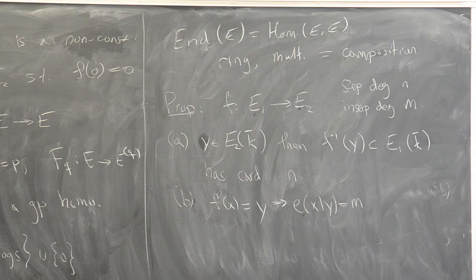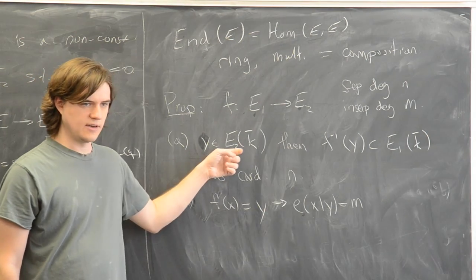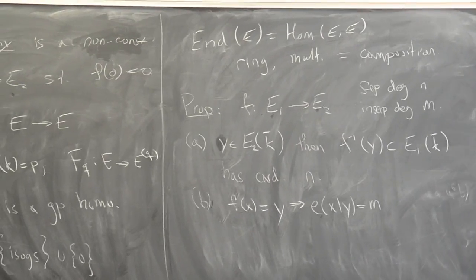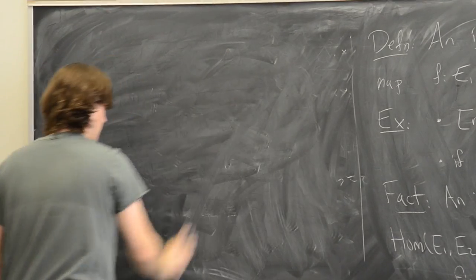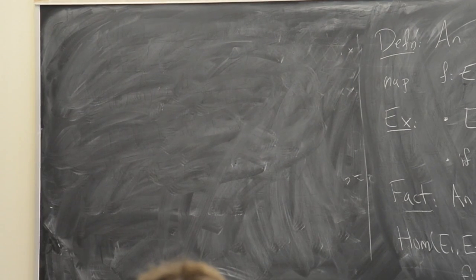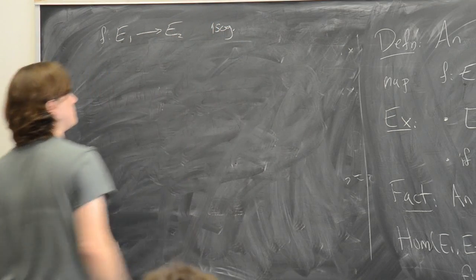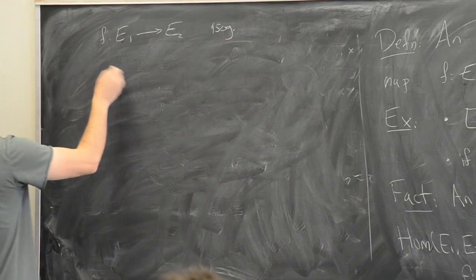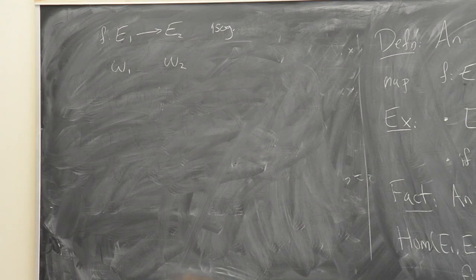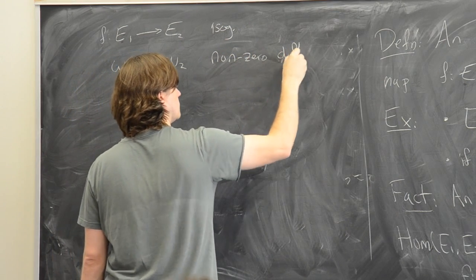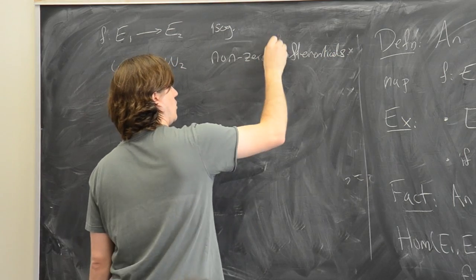One thing to note: the isogeny f is unramified — all ramification indices are 1 — if and only if it's a separable map. That's automatic in characteristic 0. When that happens, all inverse images have the expected size equal to the degree of the map.